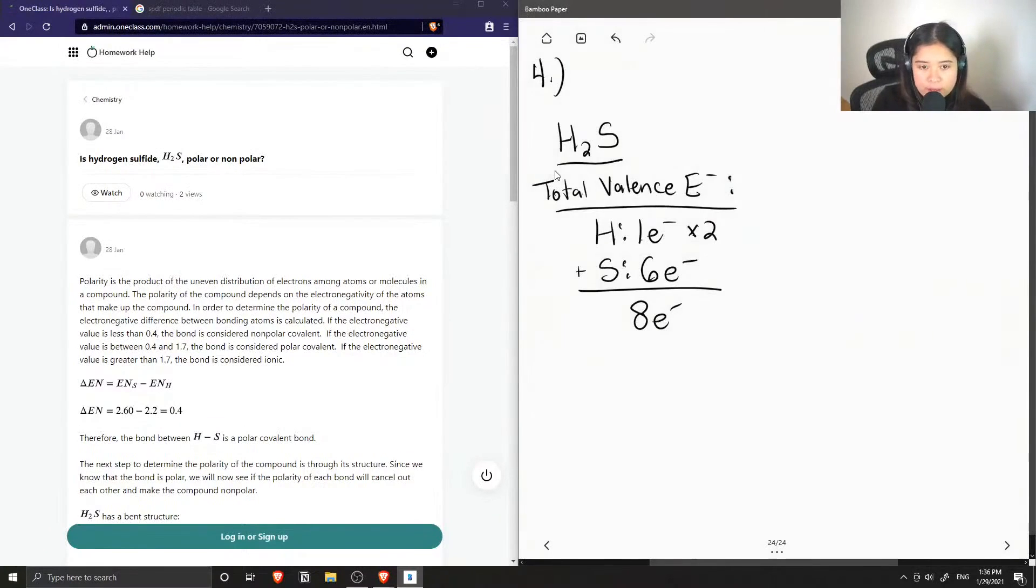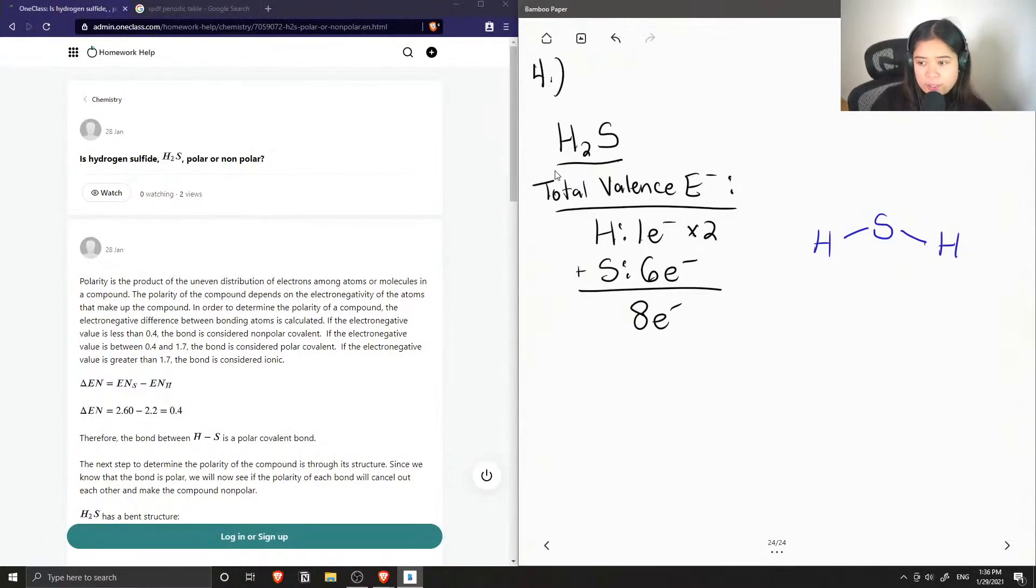Now I'm going to draw sulfur as my central atom since compared to hydrogen it is able to form multiple bonds, and then I can draw two bonds to hydrogen. If we recall that each bond contains two bonding electrons and we have two bonds, then I only have four out of the eight electrons drawn in this structure. So I draw the remaining four on my central atom like so.